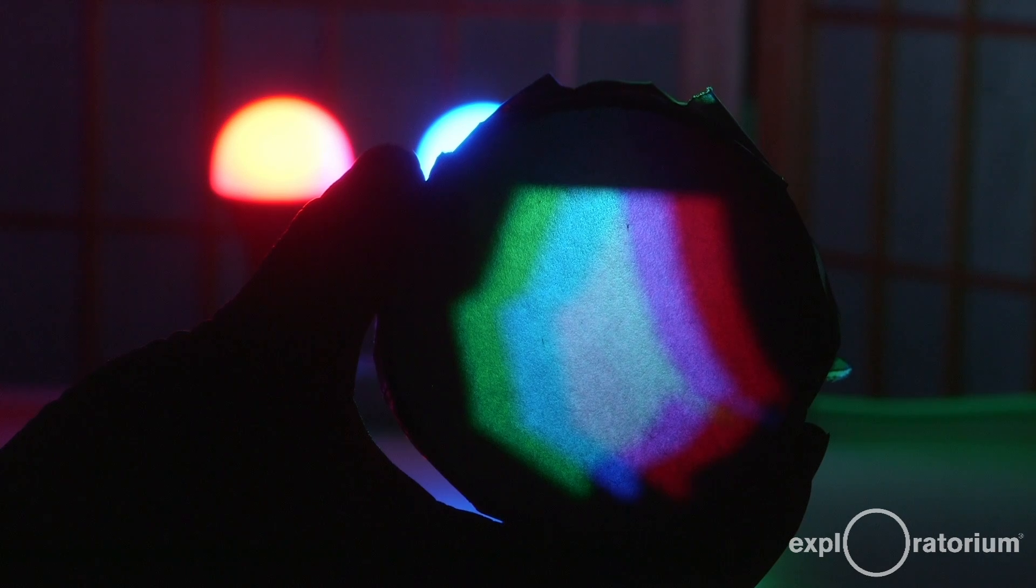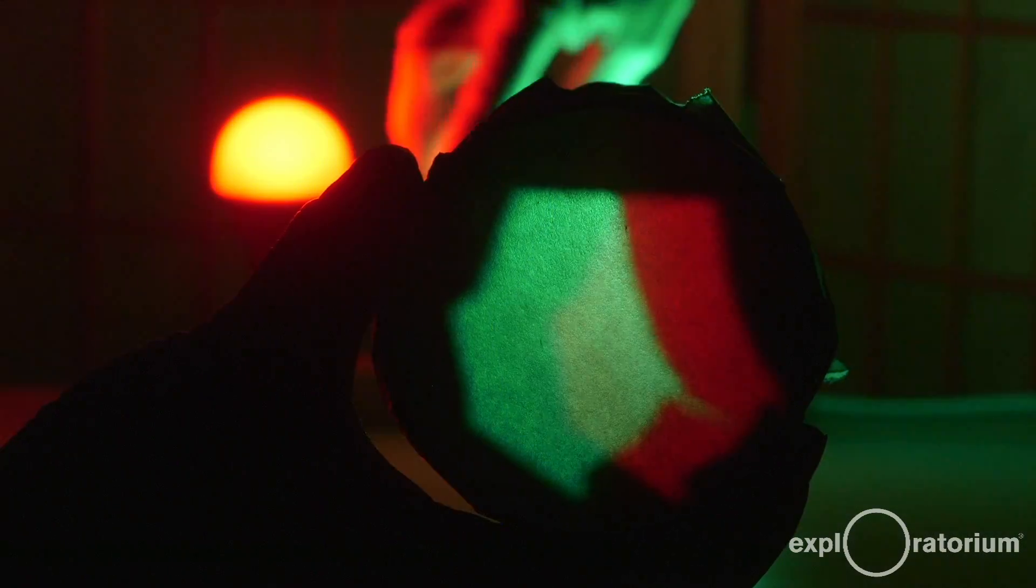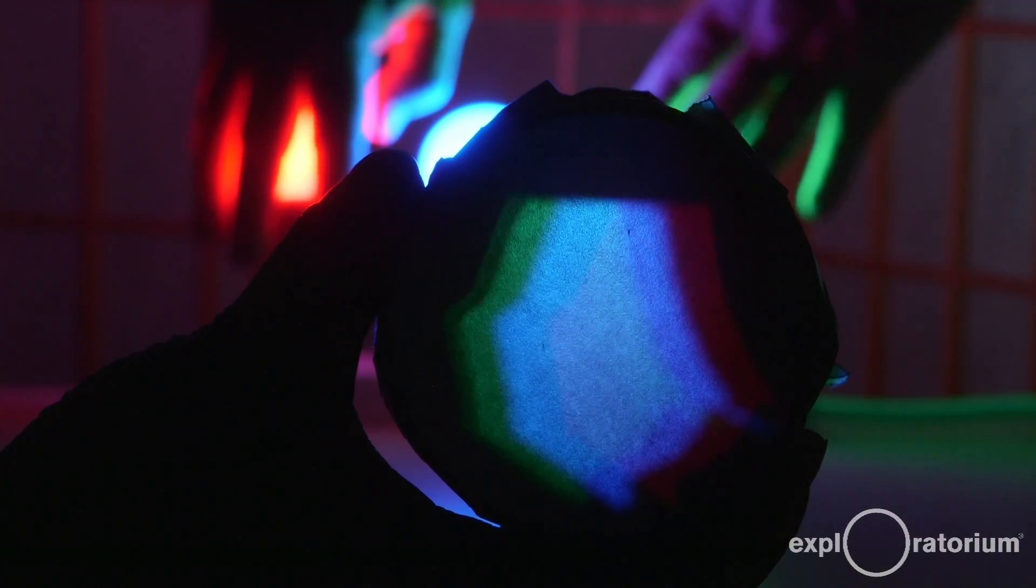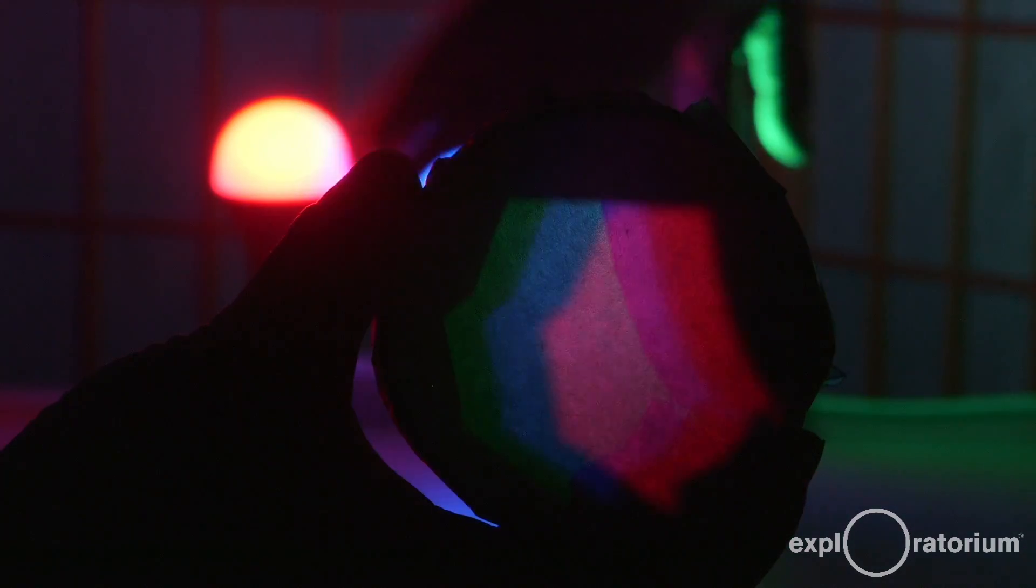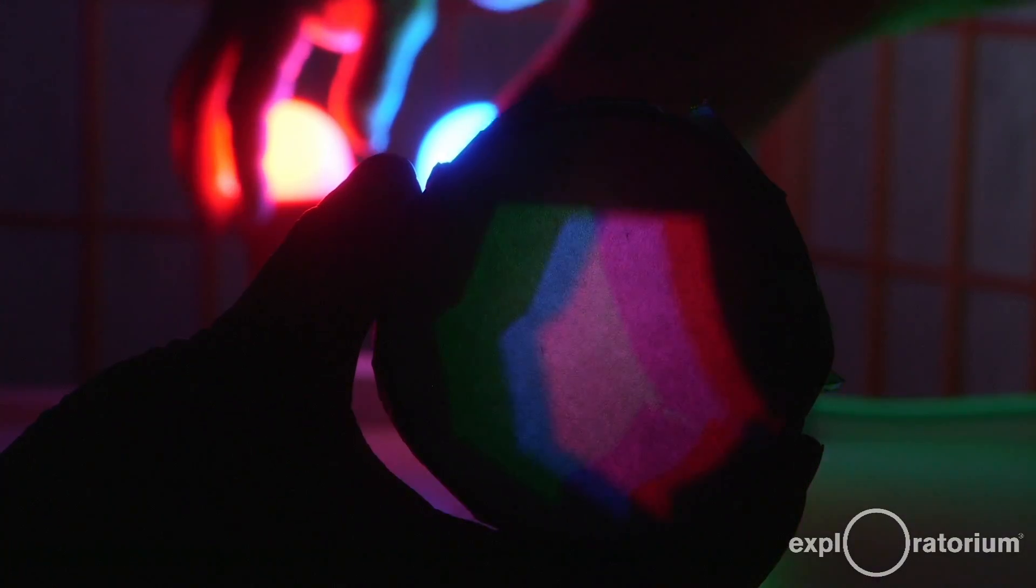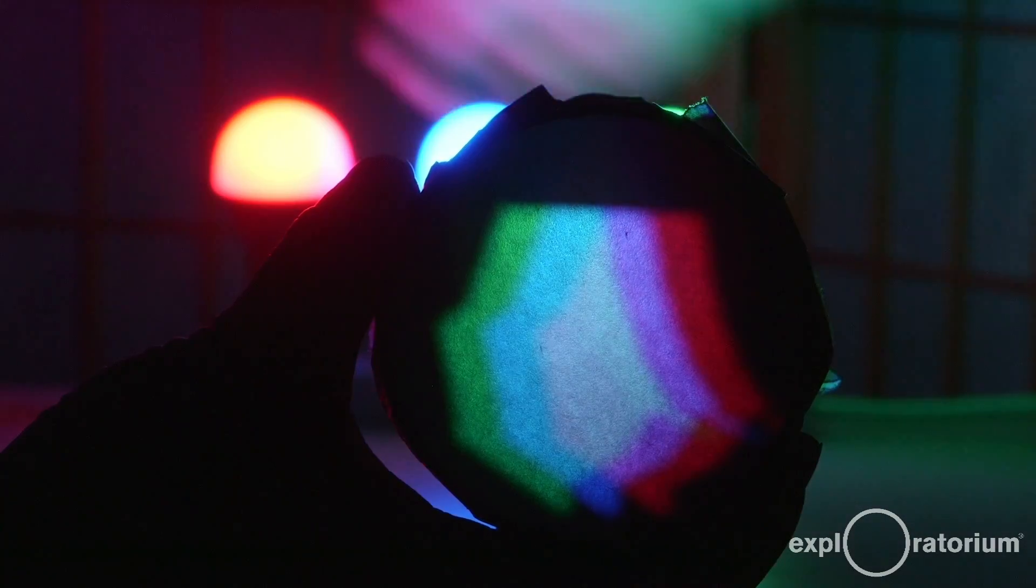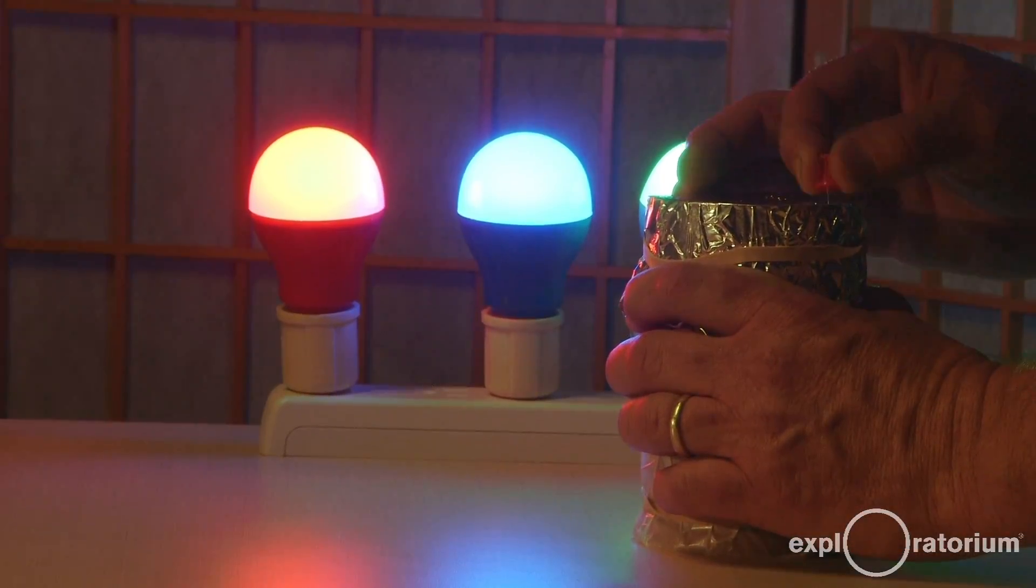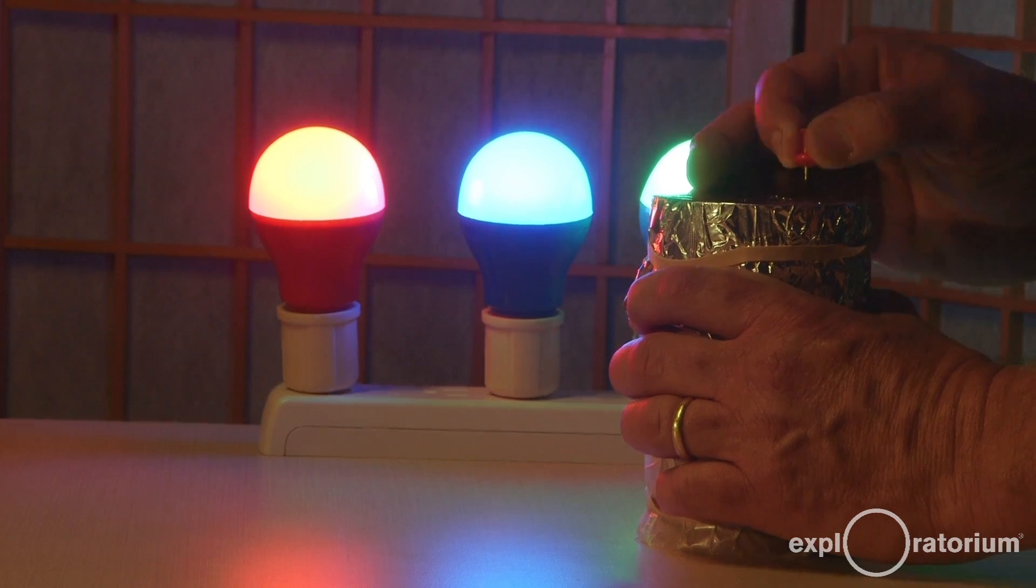You can make a whole bunch of color combinations just by turning lights on and off, or by even putting your hands in front of them and trying to dim some down more than others. One question. How do you think you'd make black? I'm going to turn them off. And if black's not your color, try punching some holes in it and make some art.